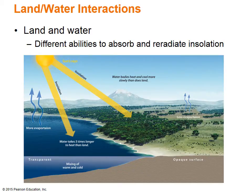Since land and water absorb and radiate heat differently, this can explain why climates are different at or near coastlines and that of interior lands. Generally, climate inland is called continental, and climate along coastlines is called maritime. Continental weather is usually hot in the summer and very cold and snowy in the winter, while maritime weather has moderate temperatures in both seasons.